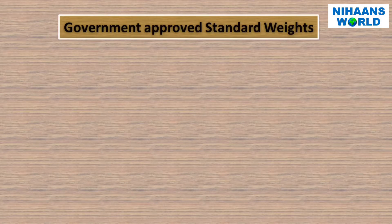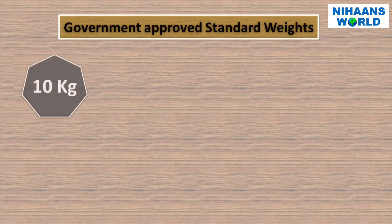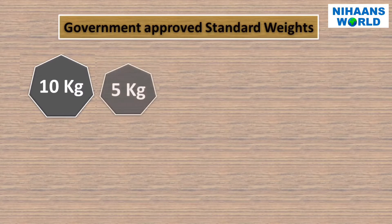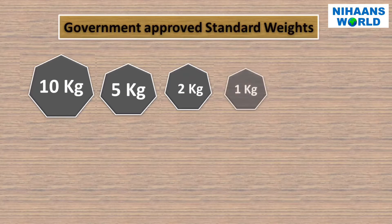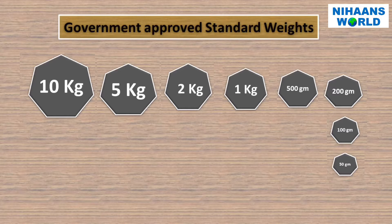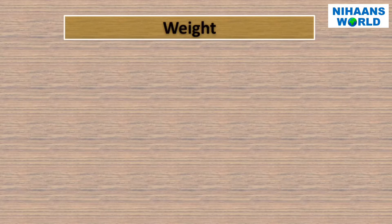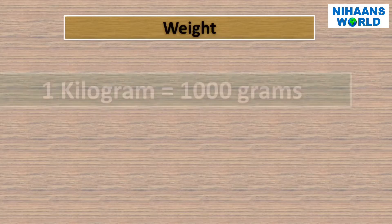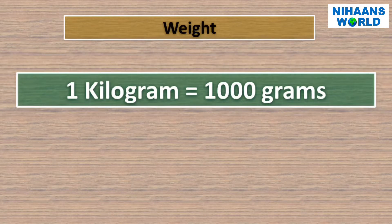These are called government approved standard weights: 10 kilograms, 5 kilograms, 2 kilograms, 1 kilogram, 500 grams, 200 grams, 100 grams, and 50 grams. Did you know that 1 kilogram is equal to 1000 grams?